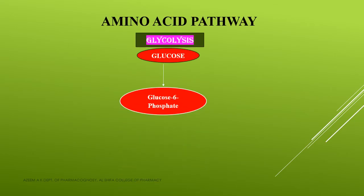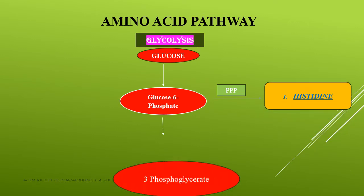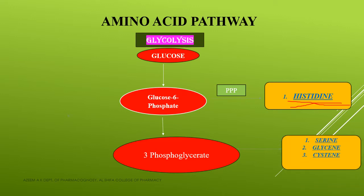Most of the amino acids are obtained from glycolysis and also from the TCA cycle. Starting from glycolysis: glucose is converted to glucose 6-phosphate, and from glucose 6-phosphate it enters into the pentose phosphate pathway. From there, the first amino acid is obtained — that is histidine. Now from glucose 6-phosphate, 3-phosphoglycerate is obtained.